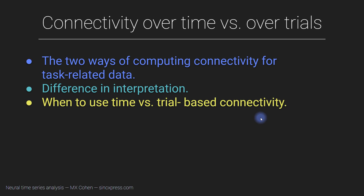In the first video of this section of the course, I mentioned the distinction between connectivity over time versus over trials. That distinction might have seemed a bit mysterious back then, but now you understand the mechanism of computing synchronization in time series data. So now I'm going to get back to this issue, make sure the distinction is really clear, and then discuss the advantages and limitations of these different dimensions over which to compute connectivity.